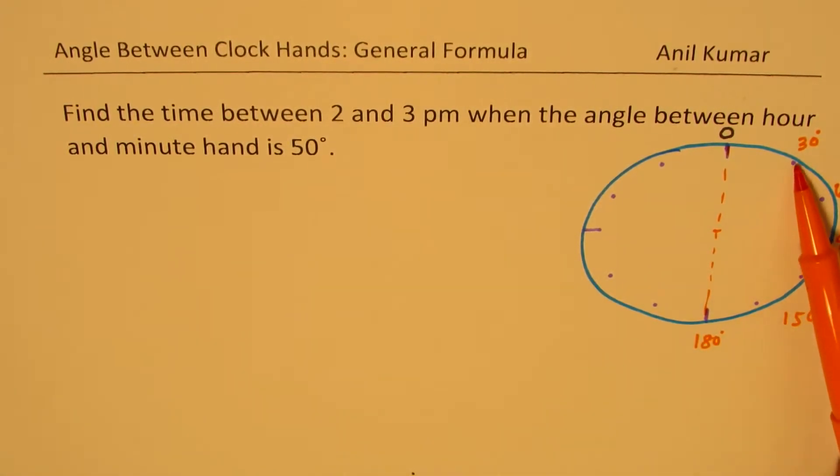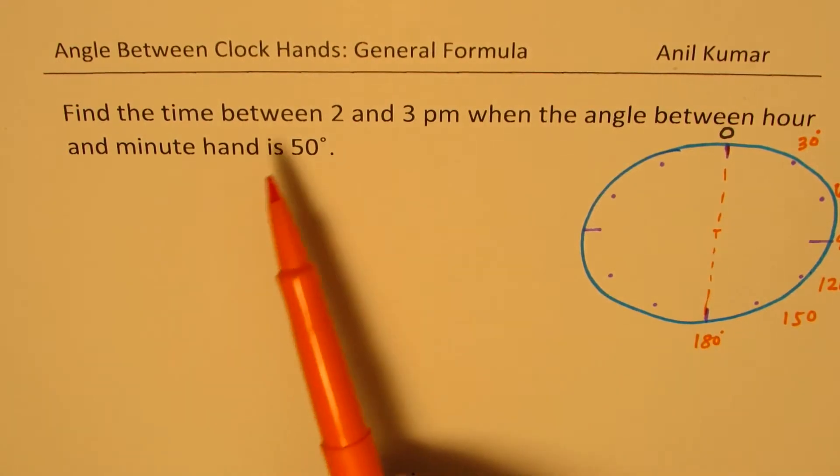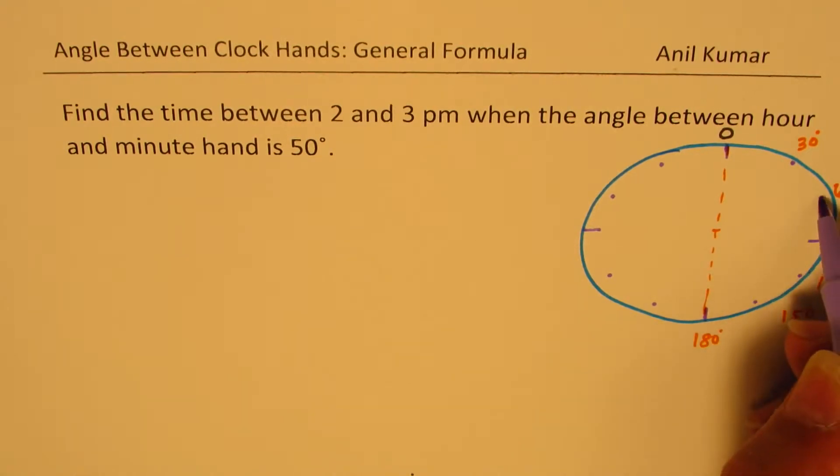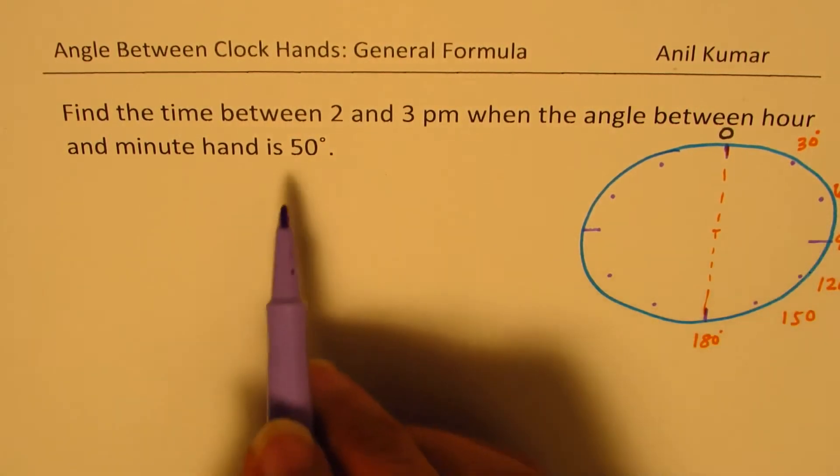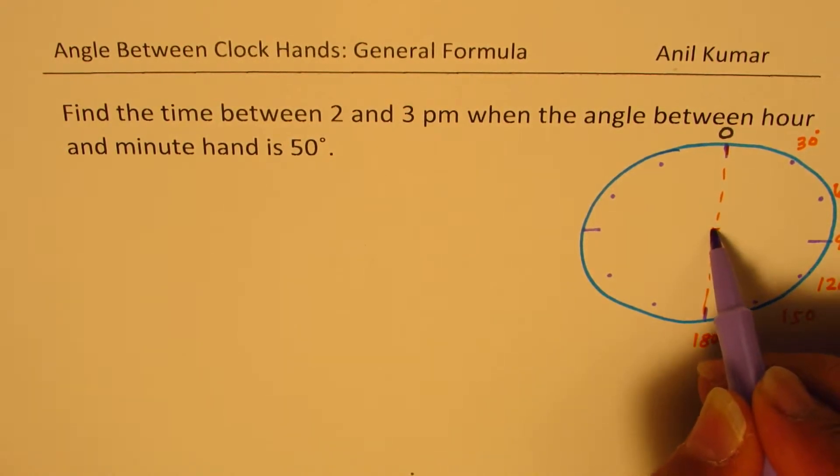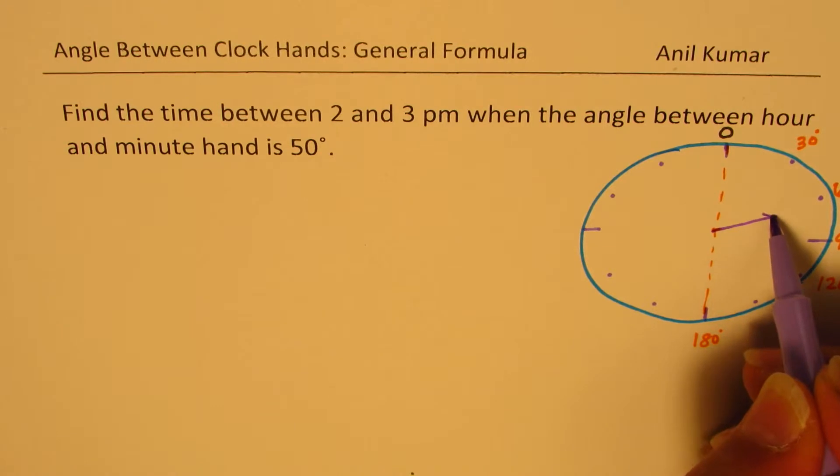So within every hour, there is 30 minutes. Now we are saying find the time between 2 to 3 hours. That means we want a situation where the hour hand is somewhere between these two and the minute hand is 50 degrees away. The hour hand, let's say, is here, for example, right?